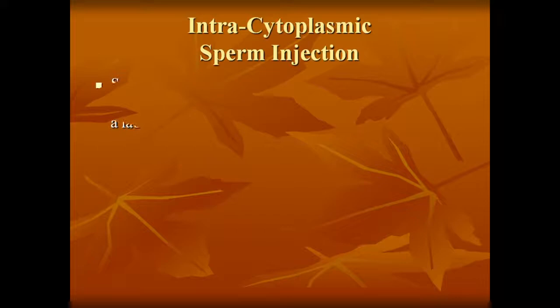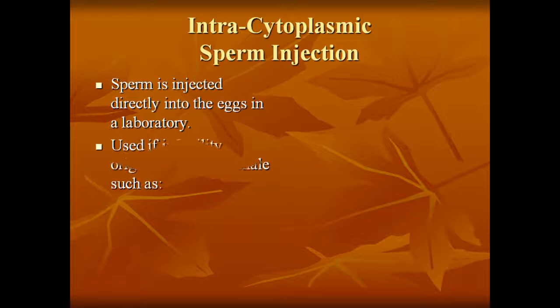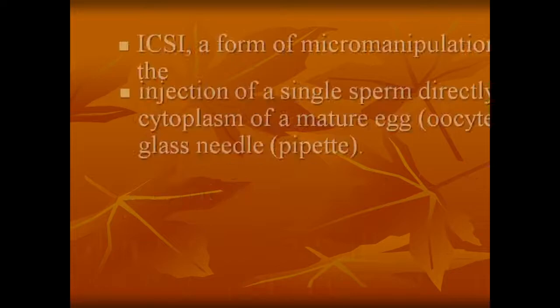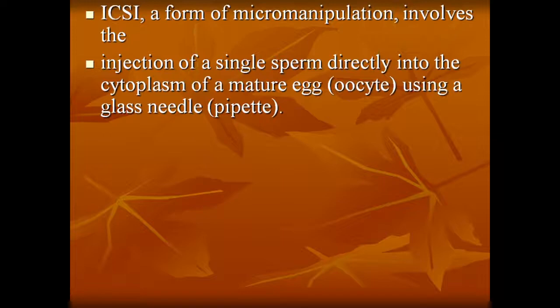Intracytoplasmic sperm injection (ICSI): the sperm is injected directly into the egg in the laboratory, used if infertility is caused by male factors such as low numbers of sperm or severe teratospermia. ICSI is a form of micromanipulation involving the injection of a single sperm directly into the cytoplasm of a mature egg using a glass micropipette.